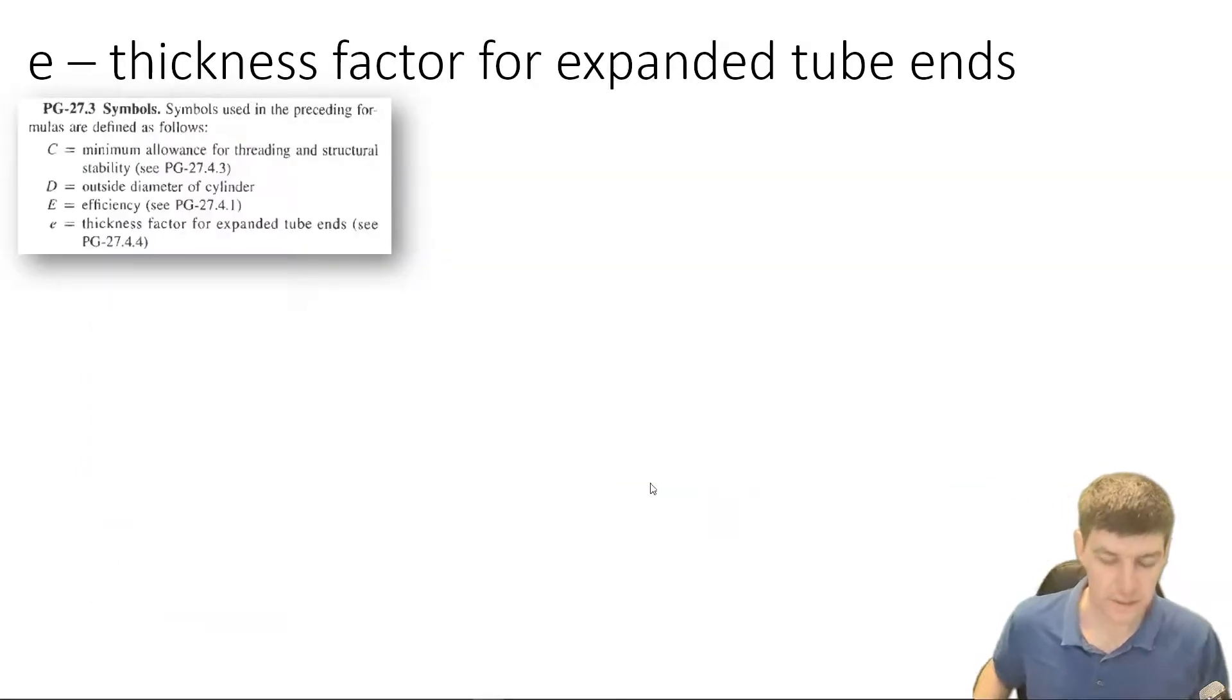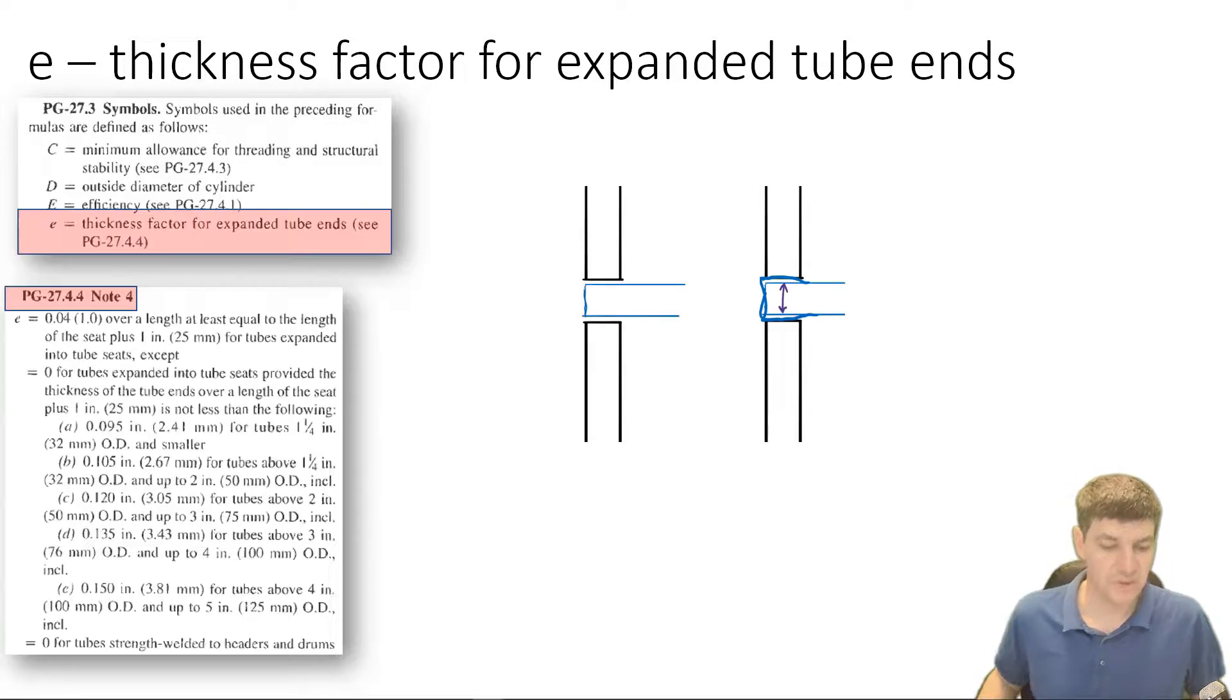So let's talk about just two things that are a little bit unusual, or you just need to have a bit of theory on for doing your calculations. So, E is the thickness factor for expanded tube ends. And it was listed out in our symbols there. And if we go to 27.4.4, what we have is a little section here. And we got a whole bunch of information that's listed.